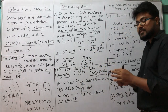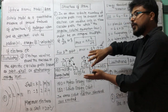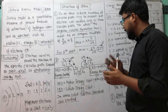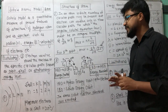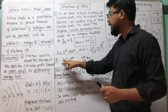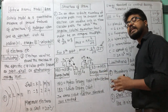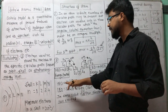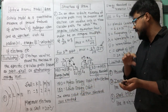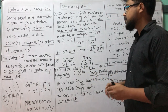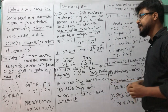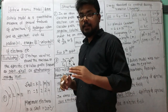When an electron makes a transition or jump from a lower energy orbit (LEO) to a higher energy orbit (HEO) — such as n1 to n2, or n2 to n3 — it must absorb energy. When it makes a transition from a higher energy orbit to a lower energy orbit — n3 to n2, n2 to n1, n4 to n3 — it will release or emit energy. But when it revolves in the same circular path, neither energy is absorbed nor emitted.